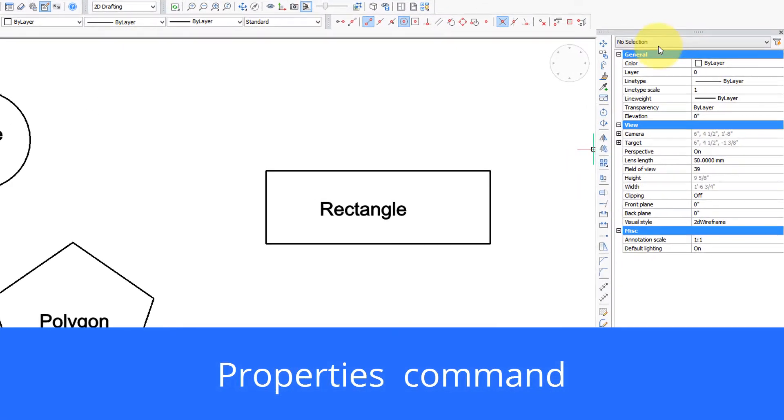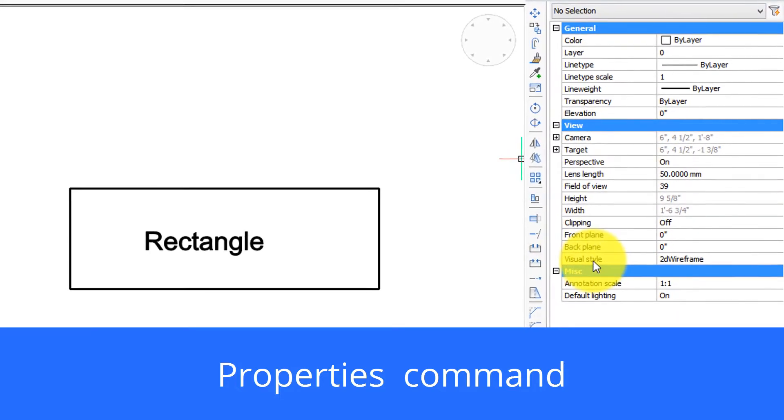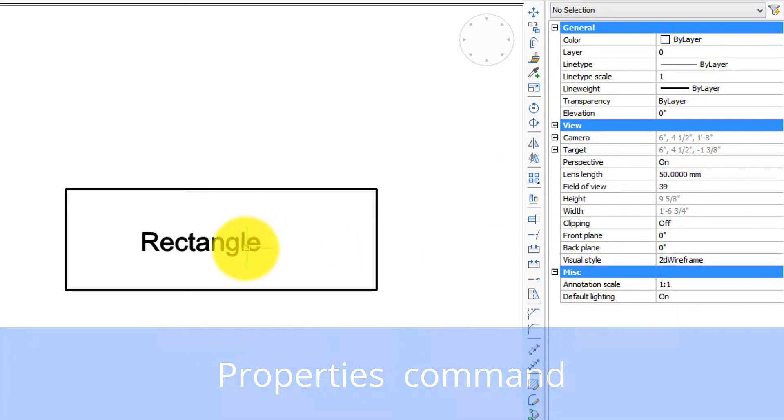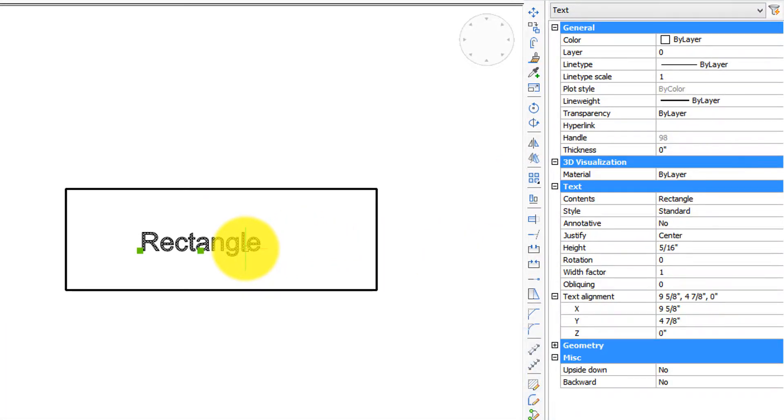One way to edit text is through the properties panel which I'm showing over here. To edit the text simply click it once, it highlights, and then over here you can see the properties available.